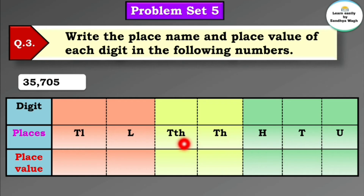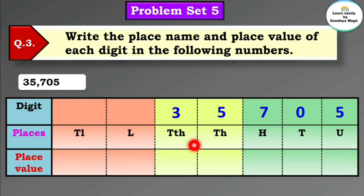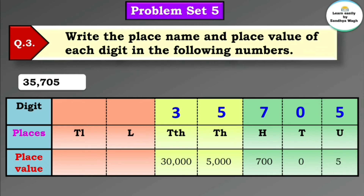For 35,705: 3 is in the 10,000 place with place value 30,000; 5 is in the 1,000 place with place value 5,000; 7 is in the 100 place with place value 700; 0 is in the tens place with place value 0 — because 0's place value is always 0 regardless of position; and 5 is in the units place with place value 5.